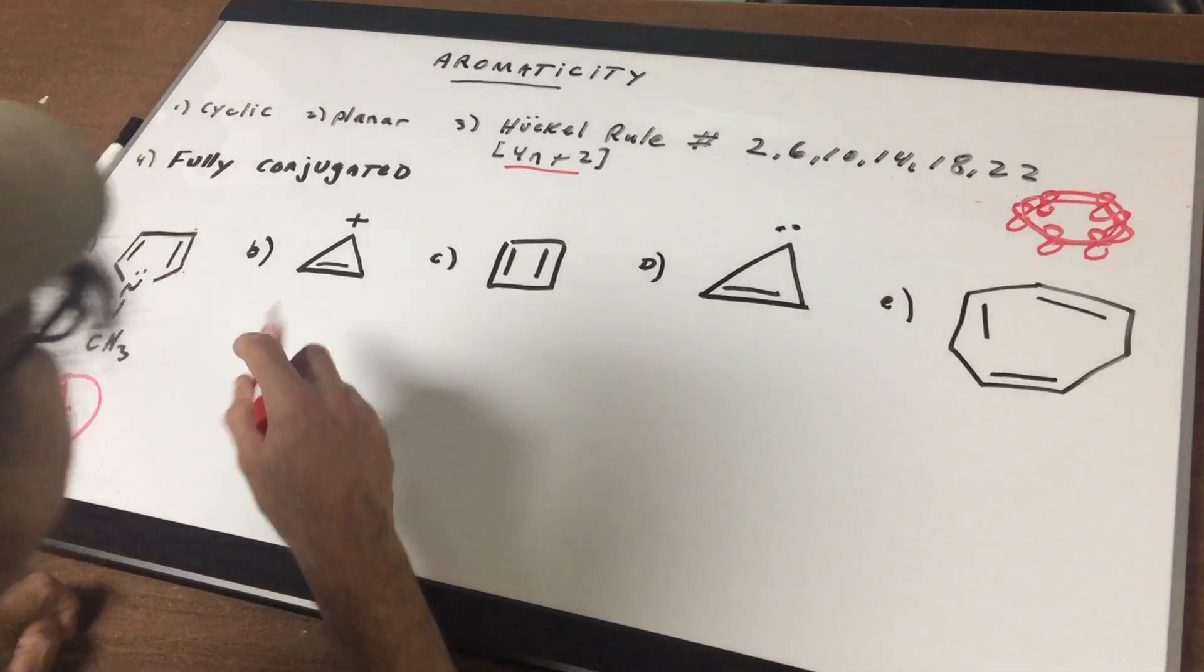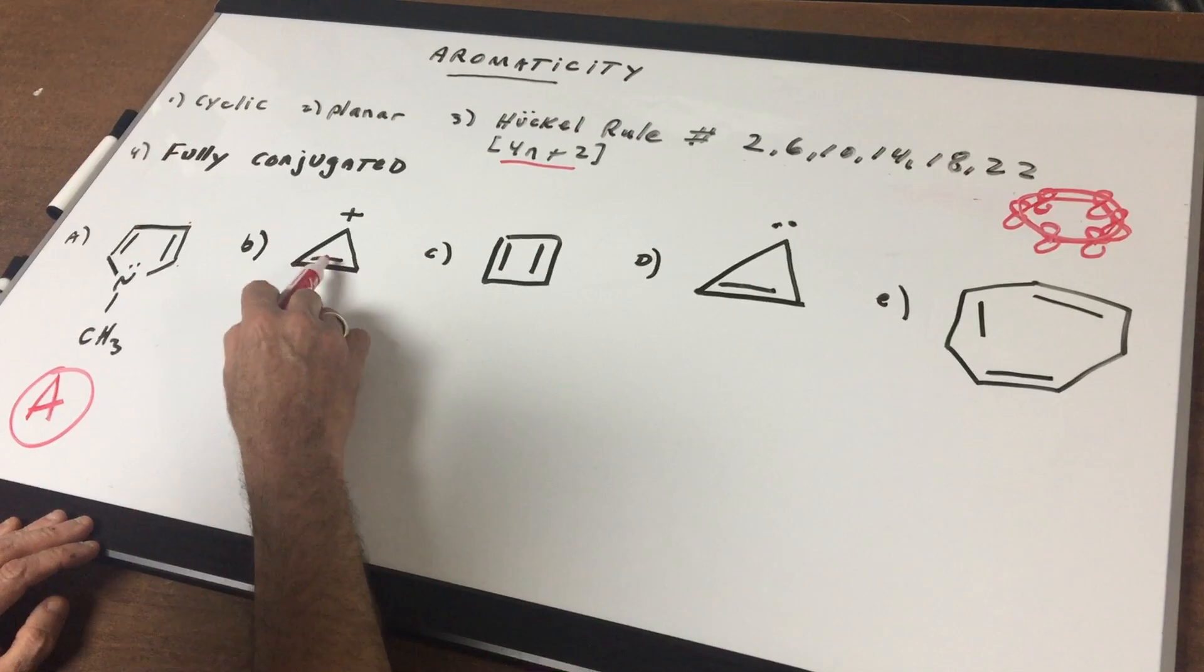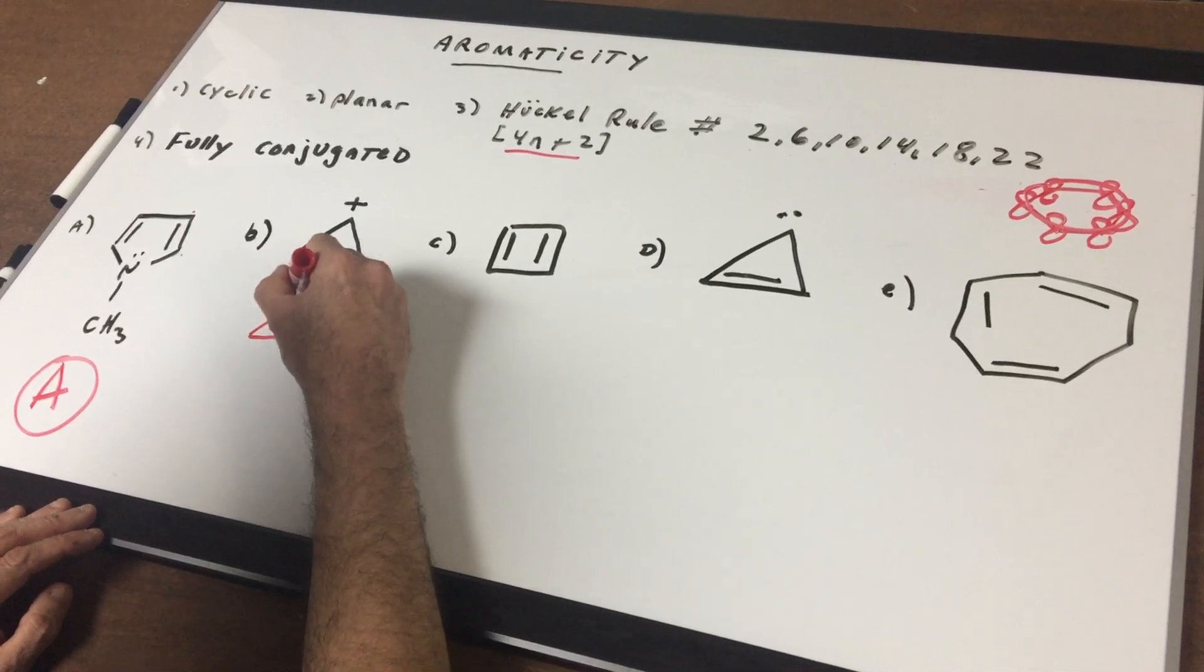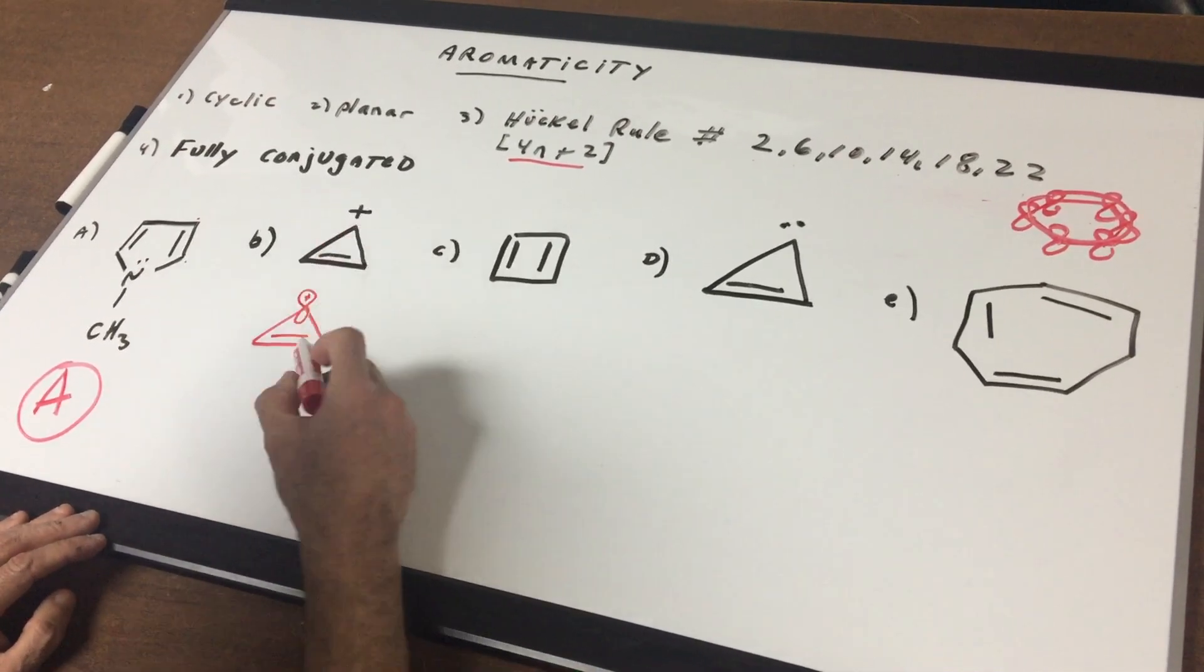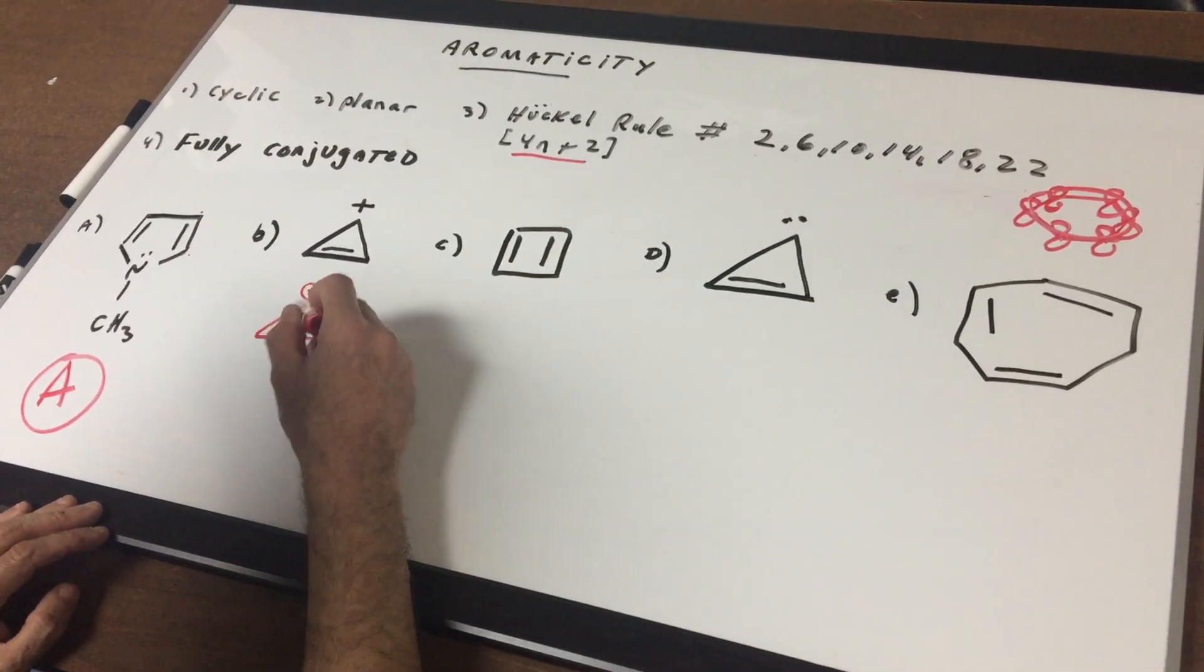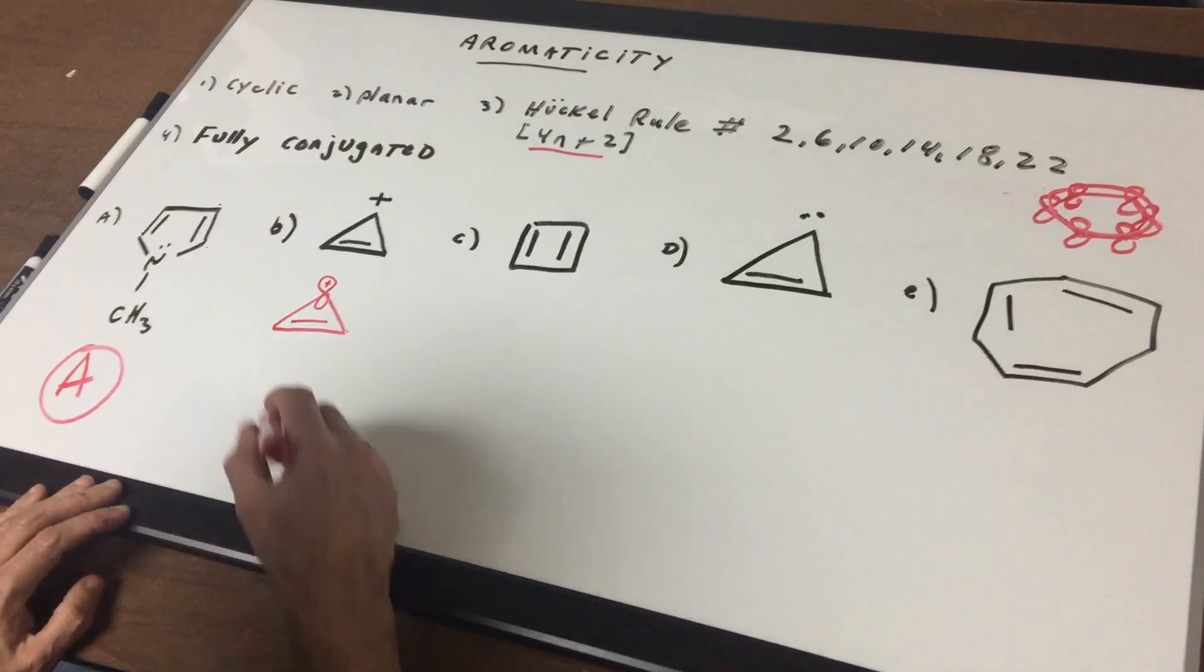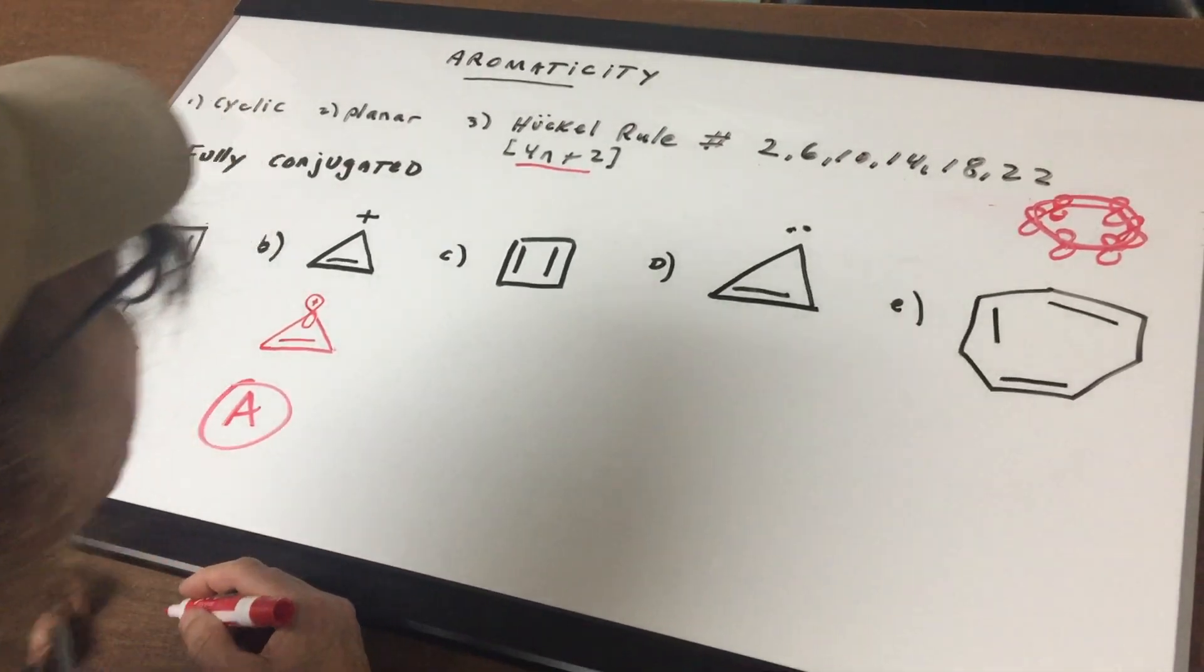Likewise, this is a DAT favorite type of question. If you have 2 electrons here, notice a positive charge means there is an empty p orbital, like an empty parking space. So as you can see, that means that those electrons can delocalize. Molecule's planar, and since they can delocalize, fully conjugated. All of these criteria are filled for the cyclopropenium cation, so this would also be aromatic.